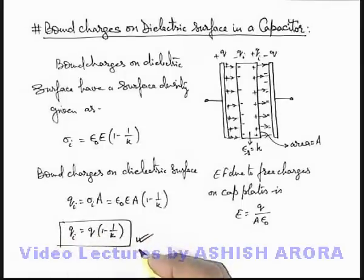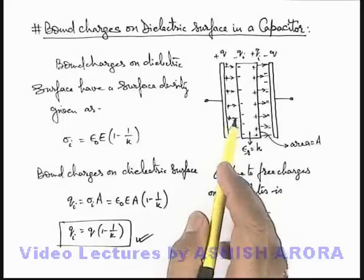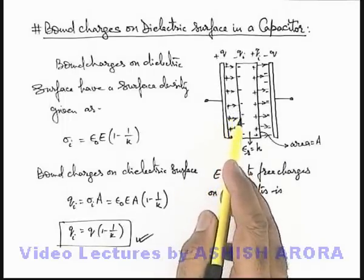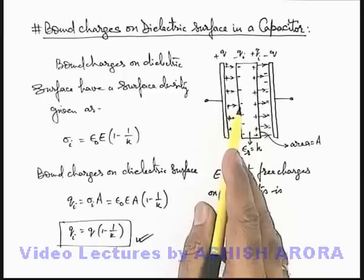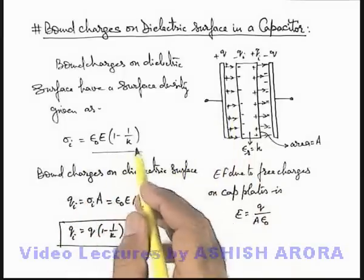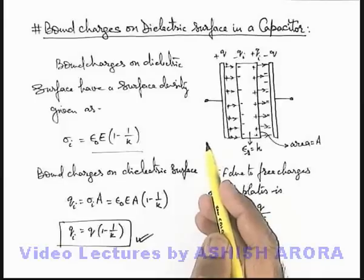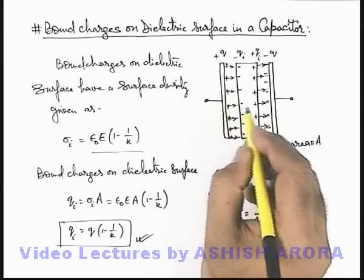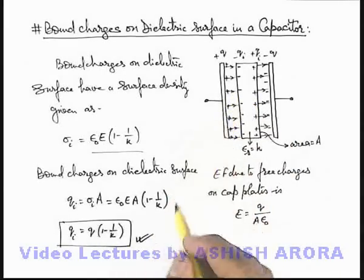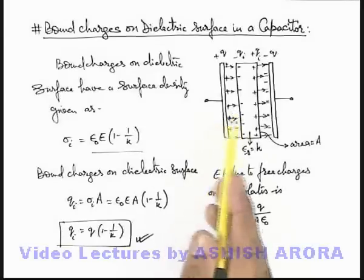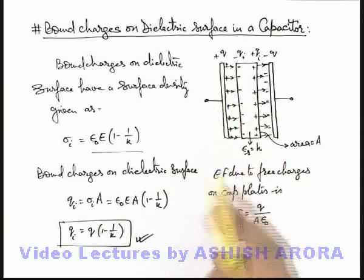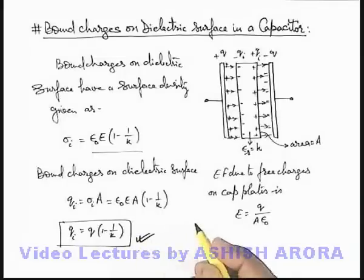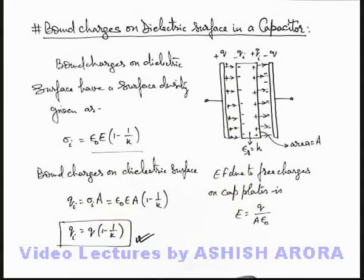This is quite a useful result: whenever an electric field is incident normally on the surface of a dielectric, the induced charge surface density on the dielectric surface is given by this expression, which we already obtained in electrostatics. This can also be directly calculated by applying Gauss's law over a small surface on the dielectric region — I am leaving this as an exercise for you. The magnitude of bound charges has been obtained here using the concept of polarization of dielectrics.